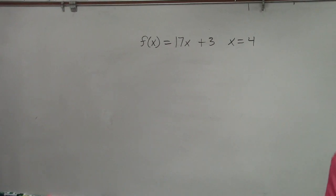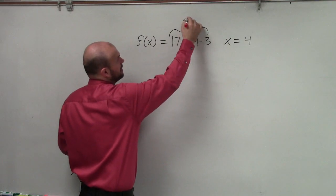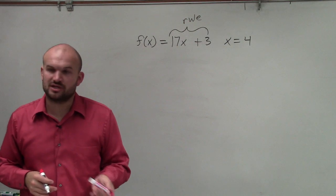And basically, a function, we need to understand that here is the rule of a function: 17 times your input value plus 3.